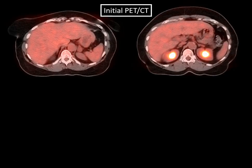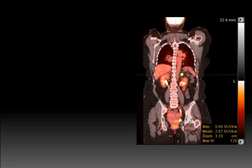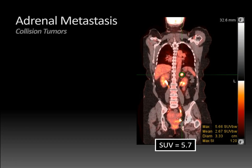The patient also had a PET CT for staging. You can see the larger and smaller left adrenal nodules, both with avidity similar to the liver — not more avid — and the max SUV was less than 3.1. However, on a follow-up PET CT done three years later, there's now increased avidity in the larger left adrenal nodule, whereas the smaller one is unchanged. Measuring the SUV gives 5.7, consistent with metastasis. This was a collision tumor.